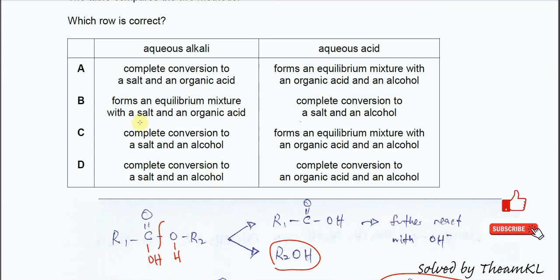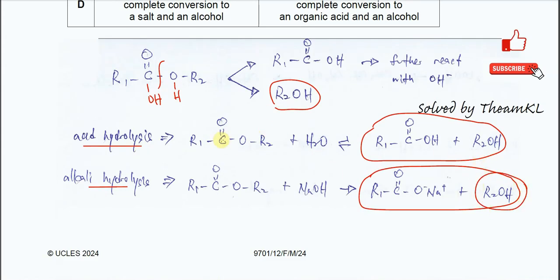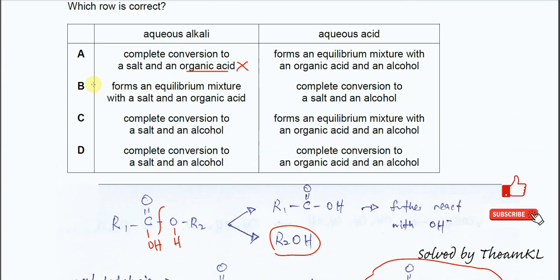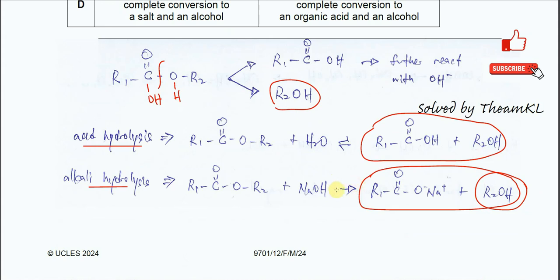For part A: aqueous alkaline gives complete conversion to salt and organic acid — wrong, because aqueous alkaline hydrolysis forms salt and alcohol, not organic acid. For B: forms an equilibrium mixture with salt and organic acid — also wrong. It will not form an equilibrium because alkaline hydrolysis goes in one direction. There is no equilibrium, because the salt will not form back the ester.